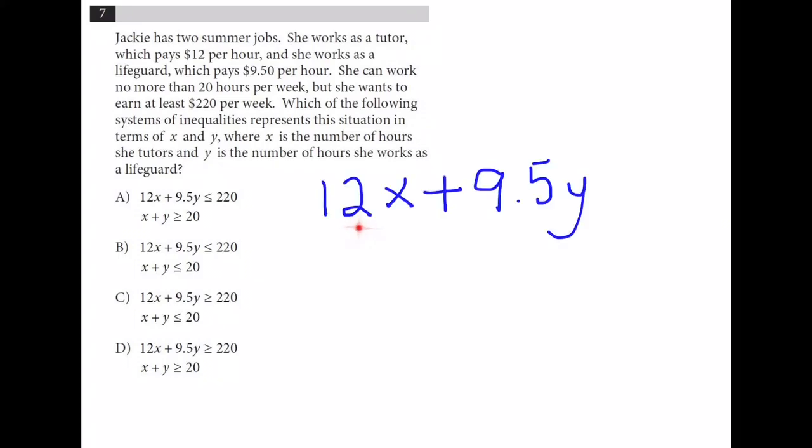Well, if she makes $12 per hour for tutoring, which we're supposed to use x for, and $9.50 per hour for the lifeguarding, which we use y, together she wants to earn at least $220 per week. So, it could be greater than, but at the very least. That's why we have a greater than or equal to sign and we're going to use that $220.